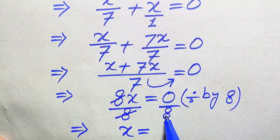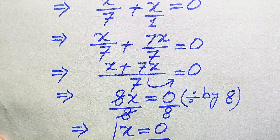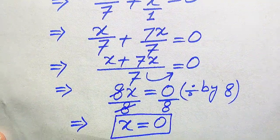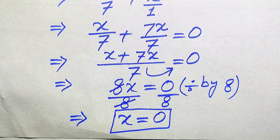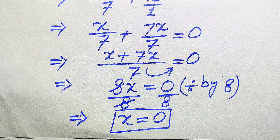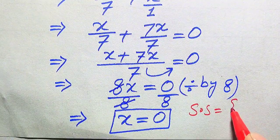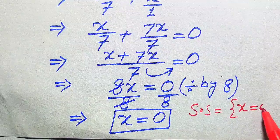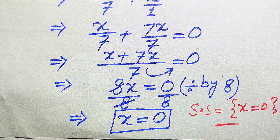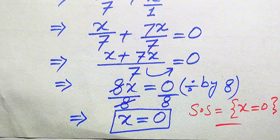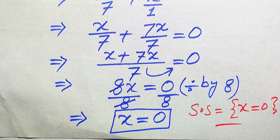Since 0 divided by 8 equals 0, we get x equals 0. We already verified in Method 1 that this value satisfies the given equation. Therefore the solution set of this question is x equals 0. This is the only solution and the final answer. Thank you for watching — please subscribe to the channel for more videos.